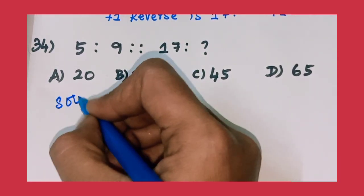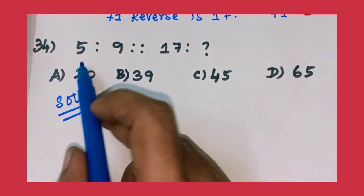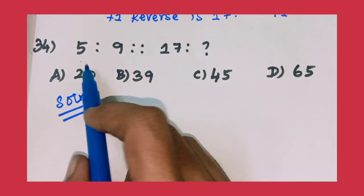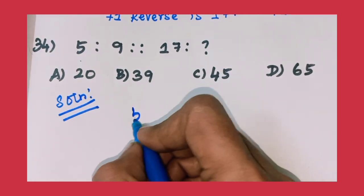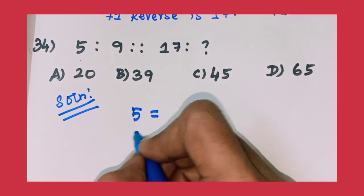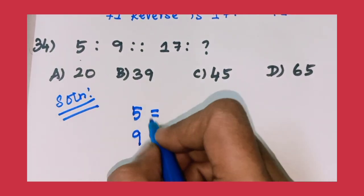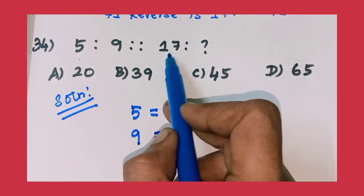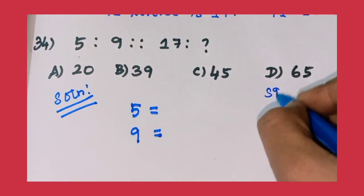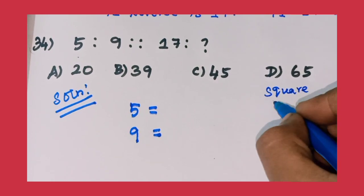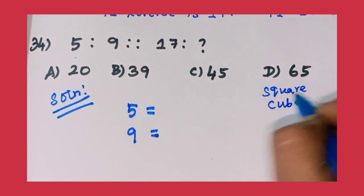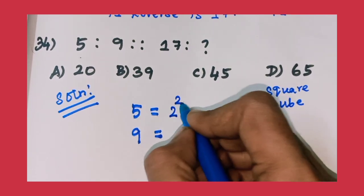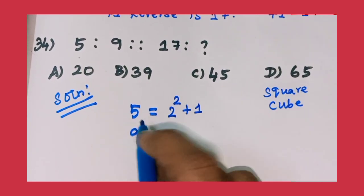Solution: The first term is 5 and second term is 9. The difference is 4 and third term is 17. Square concept, cube concept. So square concept: 2 square plus 1 equals 5.